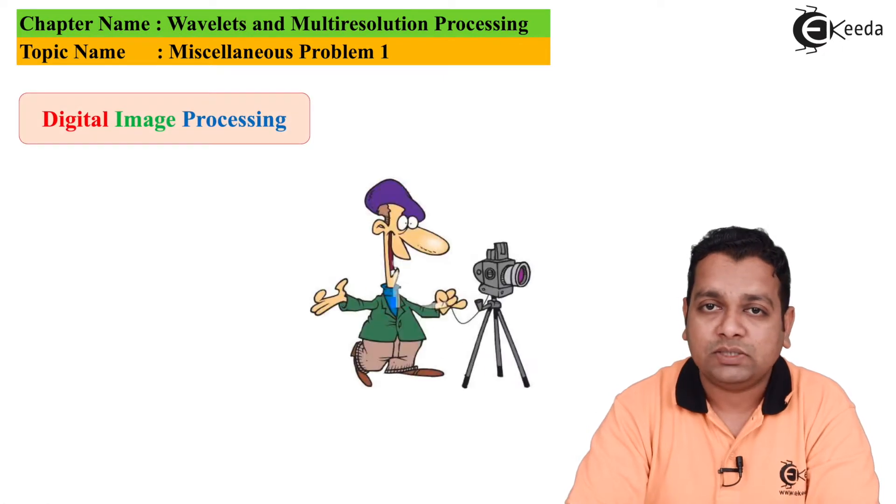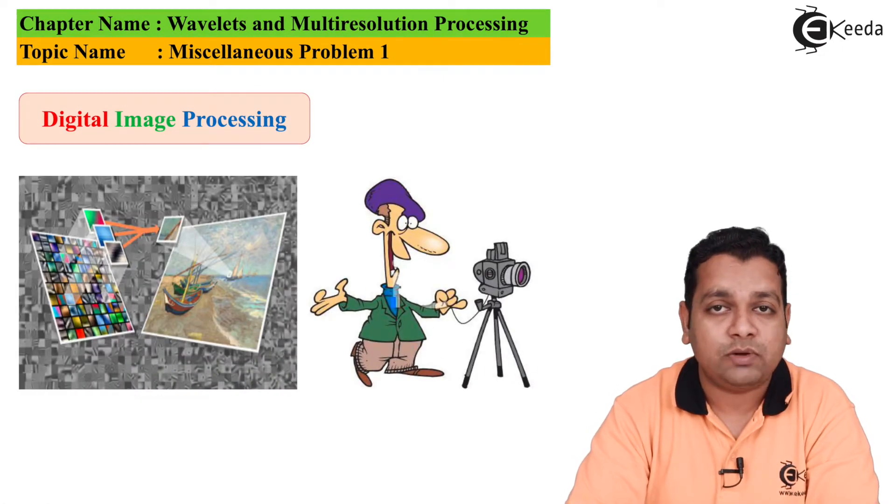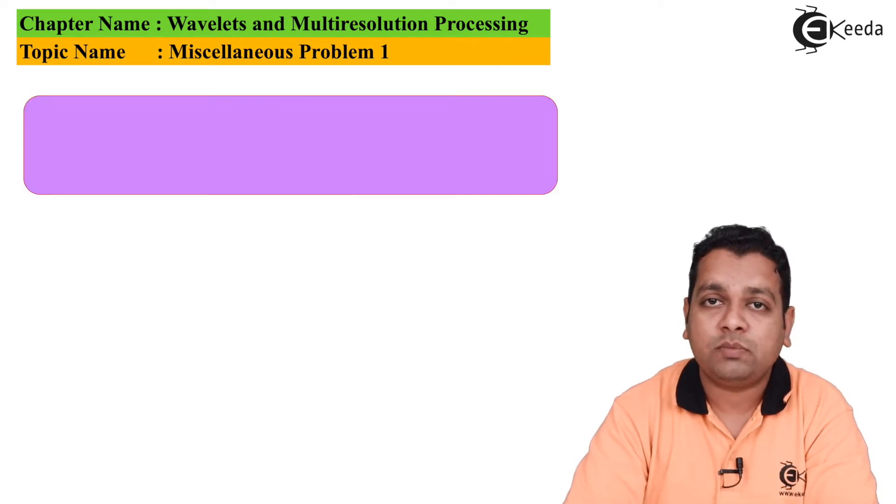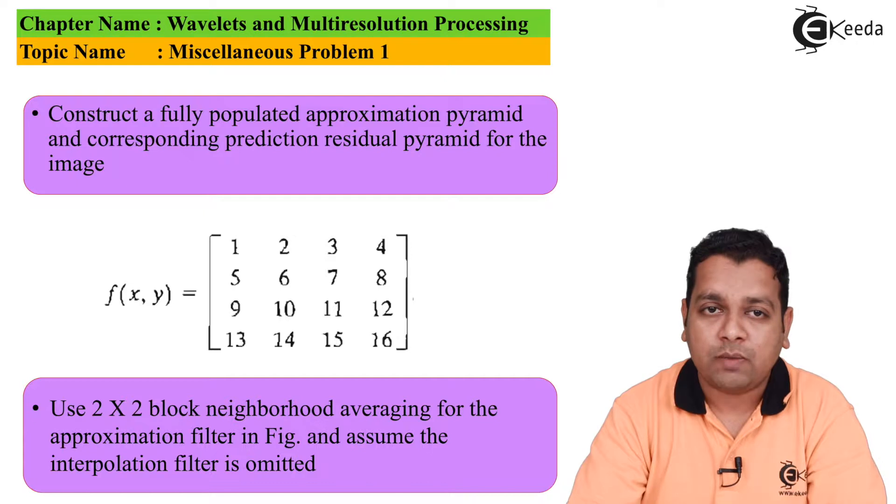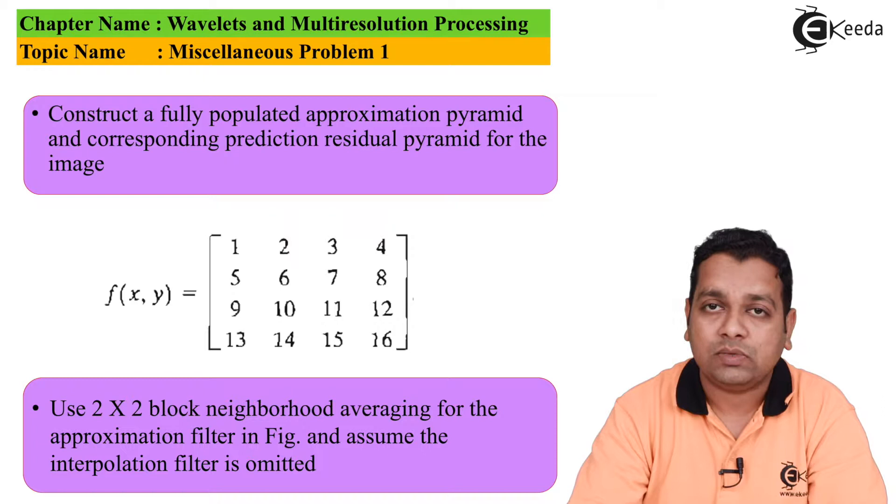Here we start with miscellaneous problem number one based on the image pyramidal concept. The problem statement is: construct a fully populated approximation pyramid and corresponding prediction residual pyramid for the image. The image sample is given to us in matrix form, represented as f(x,y), with dimensions 4 by 4.